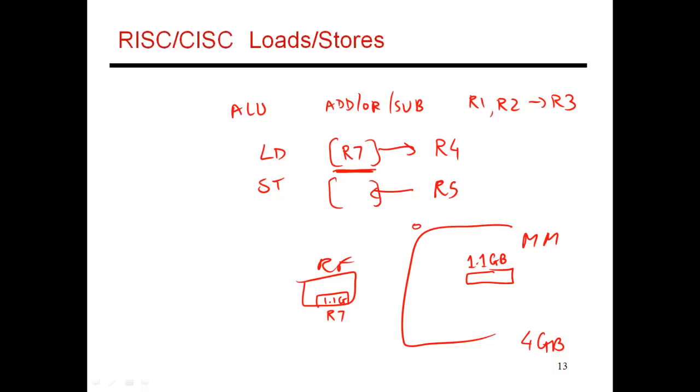So your load instruction will say, first read R7. R7 has a memory address in it, and that's the address that I care about. Now go to that memory address, get the value, and put it in some register entry. So your load instruction will first involve you reading the value R7. You can also do some fancy arithmetic. You could add 8 to it. You could say that 1.1 gig is the start of my stack. And what I care about is some variable that is perhaps sitting 8 bytes away from the start of my stack. So get the value in R7, add 8 to it. That gives me a pointer to the value that I care about. Now get that value and put it in R4. So that's what a load instruction is doing in this case. And so R7 is an input to this load instruction. And the output of this instruction is going into R4.